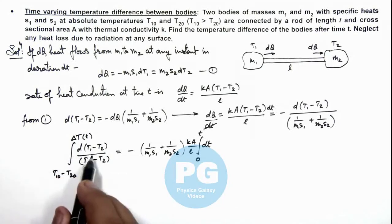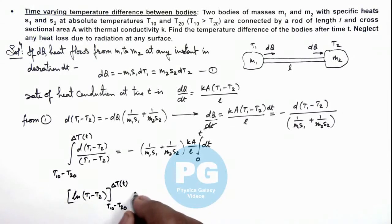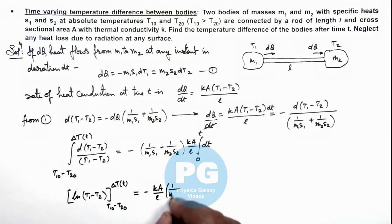This left hand side after integration becomes ln(T₁ - T₂), for which we apply the limits from T₁₀ - T₂₀ to ΔT as a function of time. And this is equal to -kA/l multiplied by (1/m₁s₁ + 1/m₂s₂) multiplied by t.